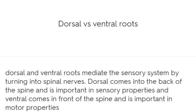Dorsal versus ventral roots: Dorsal and ventral roots mediate the sensory system by turning into spinal nerves. The dorsal root comes into the back of the spine and is important in sensory properties; the ventral root comes in front of the spine and is important in motor properties.